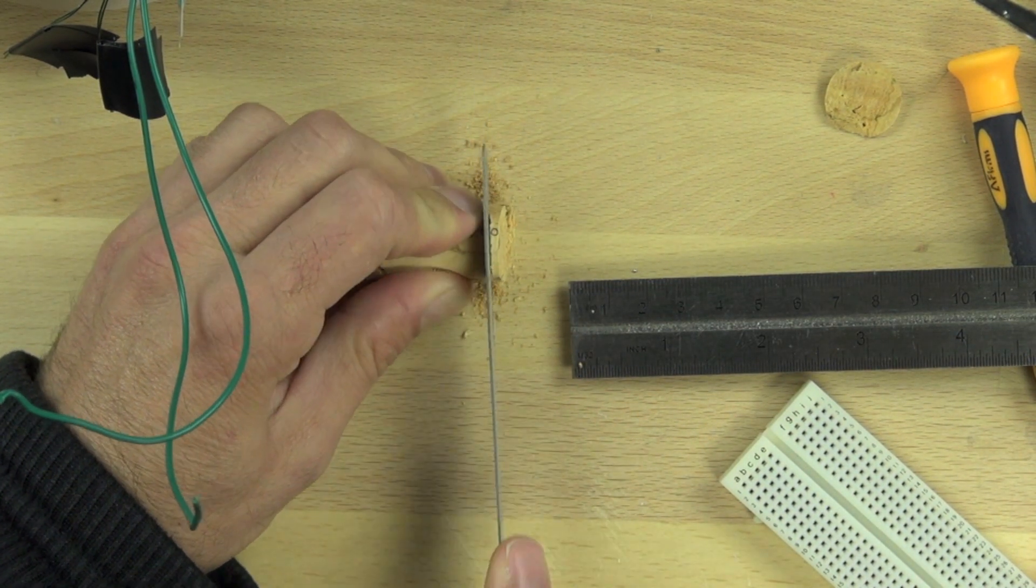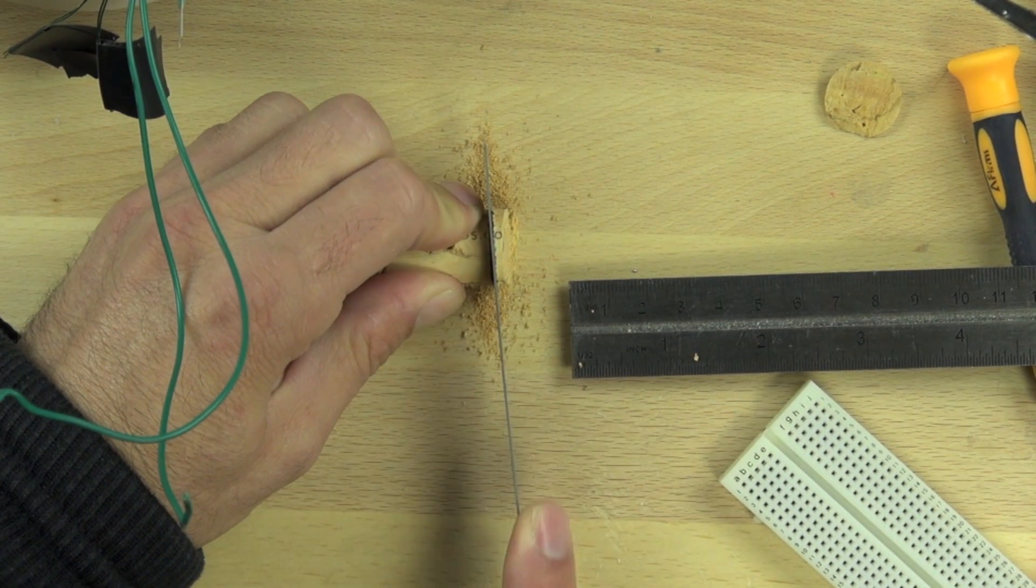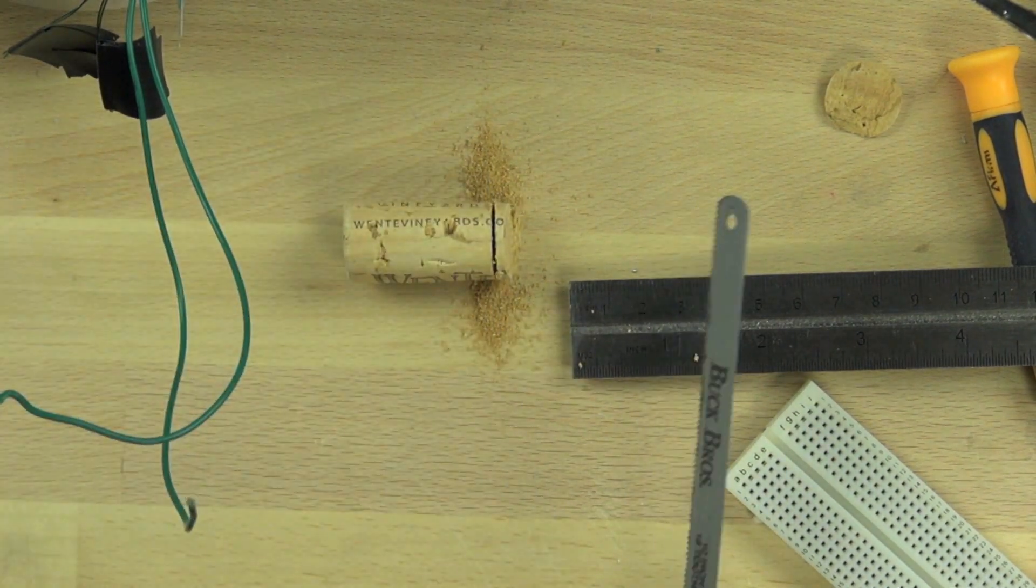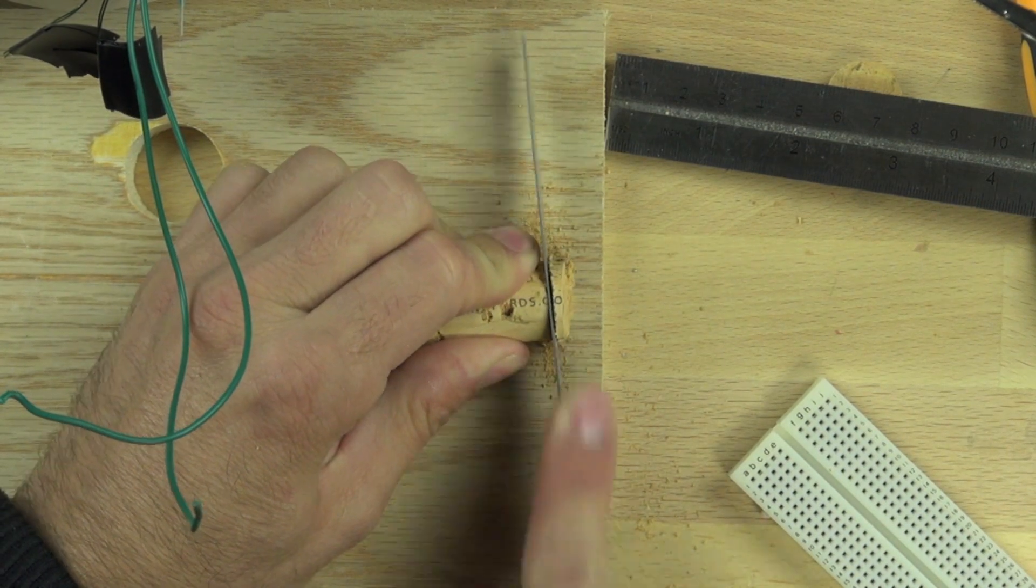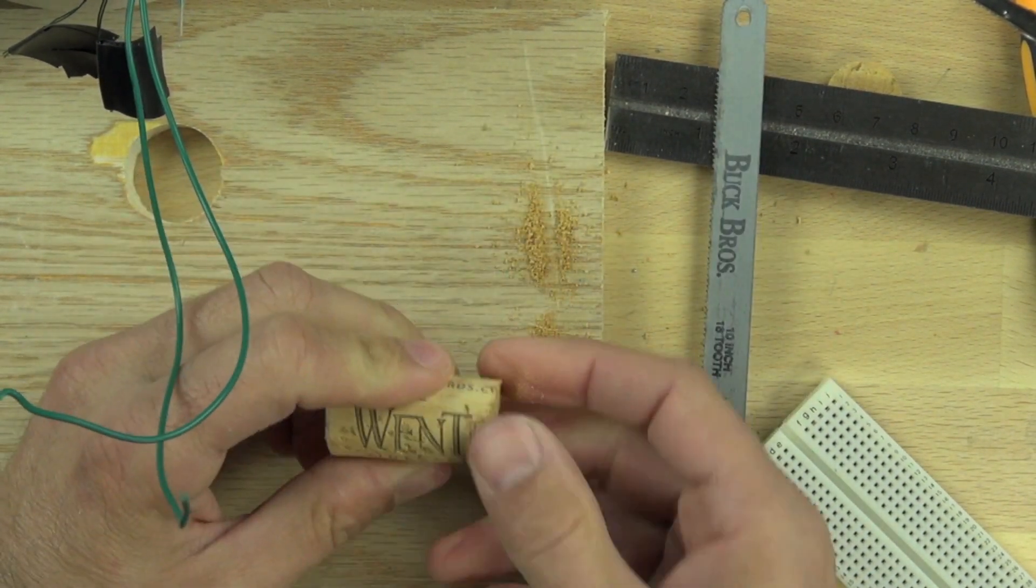We're trimming the rough edge off with a hacksaw blade. I should be doing that on top of a scrap piece of wood, so we'll move it there so we don't scar up the table when we get to the bottom.